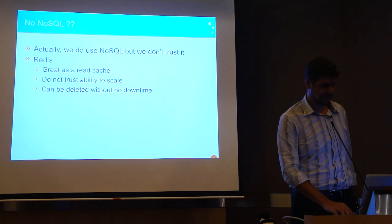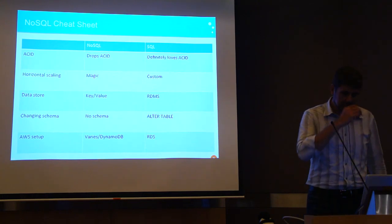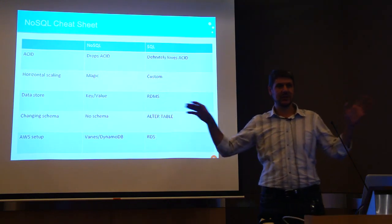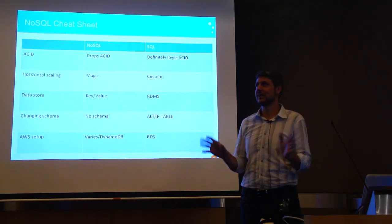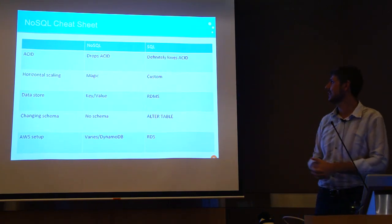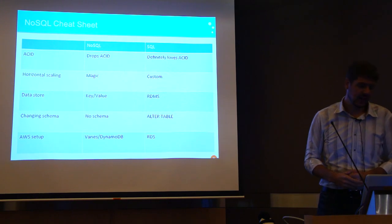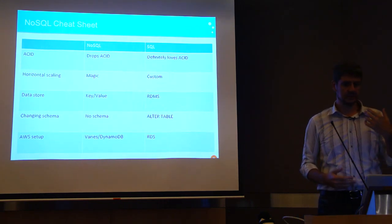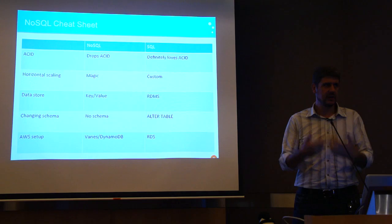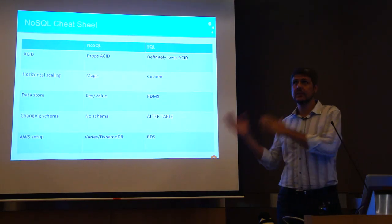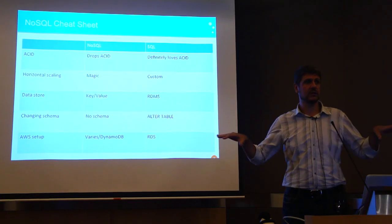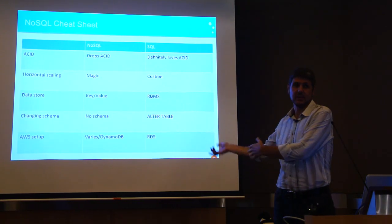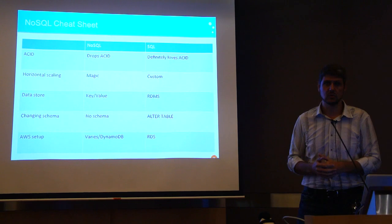We use Redis to solve certain performance problems but we're not relying on it. NoSQL is a very broad term, so I'm sure someone can point out a mistake in this comparison chart. The first line is ACID. ACID means: I'm running a bank and I want to make sure I don't give a customer too much money. You want to do atomic changes to a database and guarantee that either it will completely fail or completely succeed - there's no middle ground.